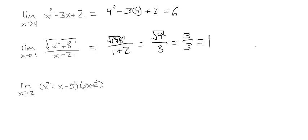The last example is the limit as x goes to 2 of (x² + x − 5)(3x + 2). We'll use the sum and difference rule and the product rule here.